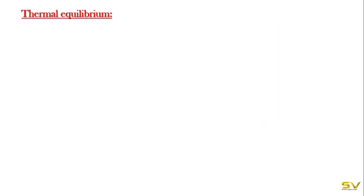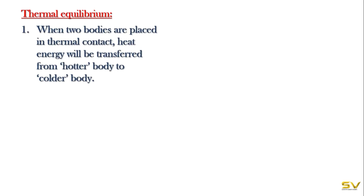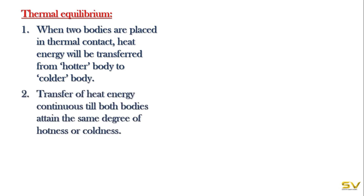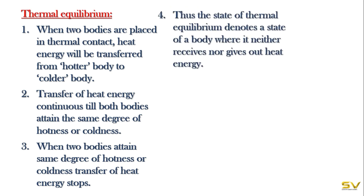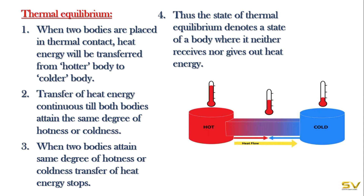What is thermal equilibrium? When two bodies are placed in thermal contact, heat energy will be transferred from the hotter body to the colder body. Transfer of heat energy continues till both bodies attain the same degree of hotness or coldness. When both bodies attain the same degree, transfer of heat energy stops. Thus, the state of thermal equilibrium denotes a state where a body neither receives nor gives out heat energy.